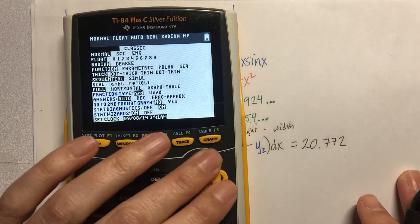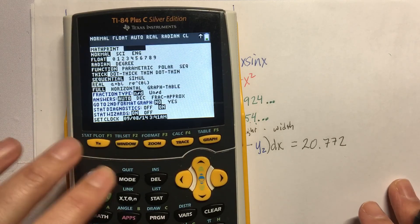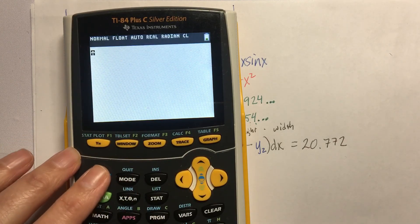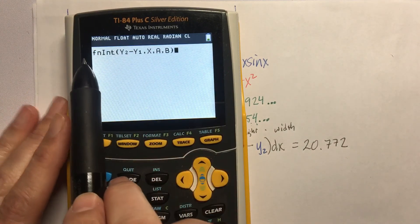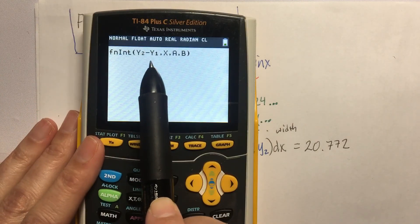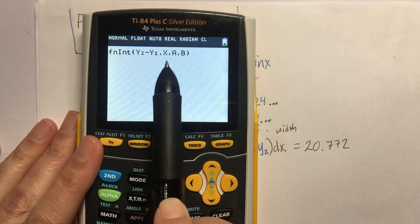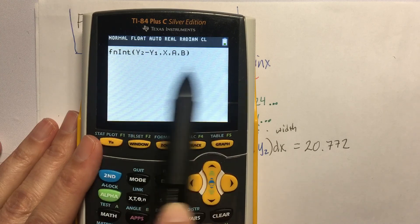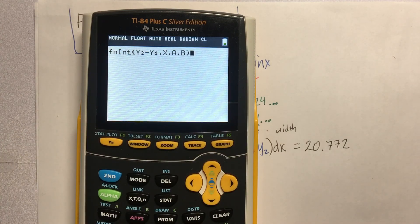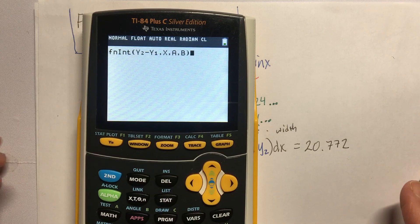And remember, if you have the older calculator, it's going to look like this when you do it. It'll be like that fnInt. It'll still be Y2 minus Y1, but then a comma, an X, comma, A, comma, B. That's how you see it on the older calculators, but it still works the same way.